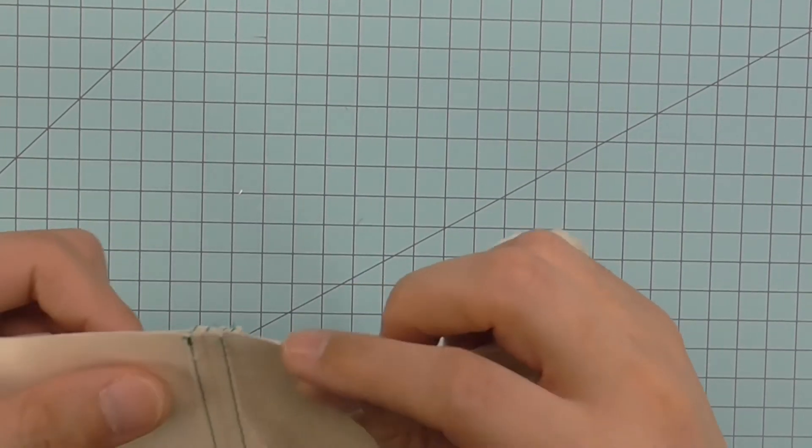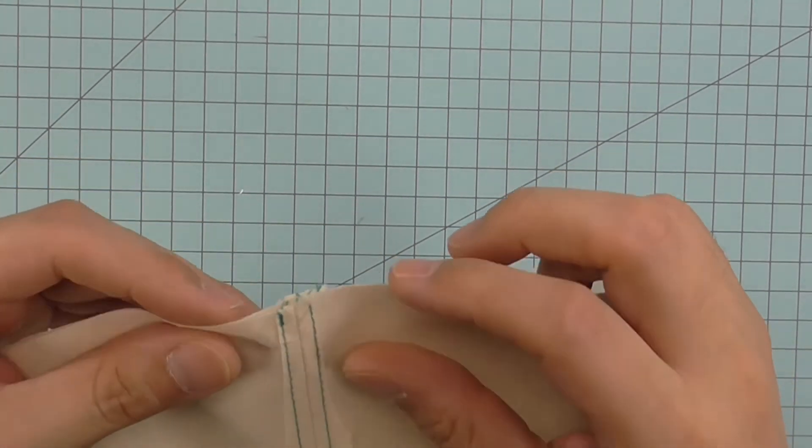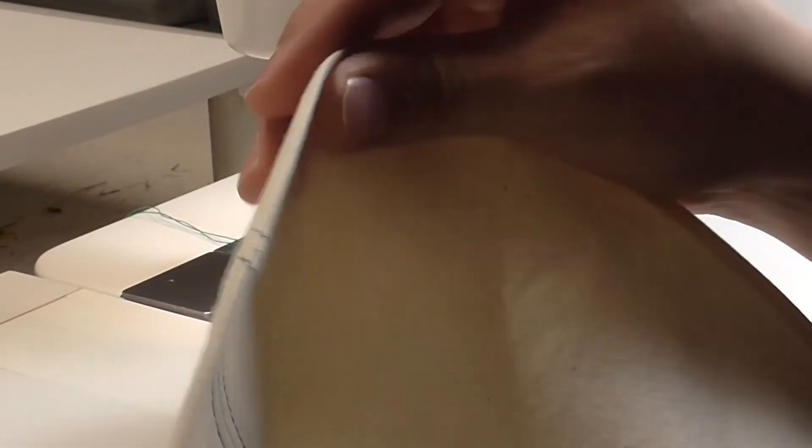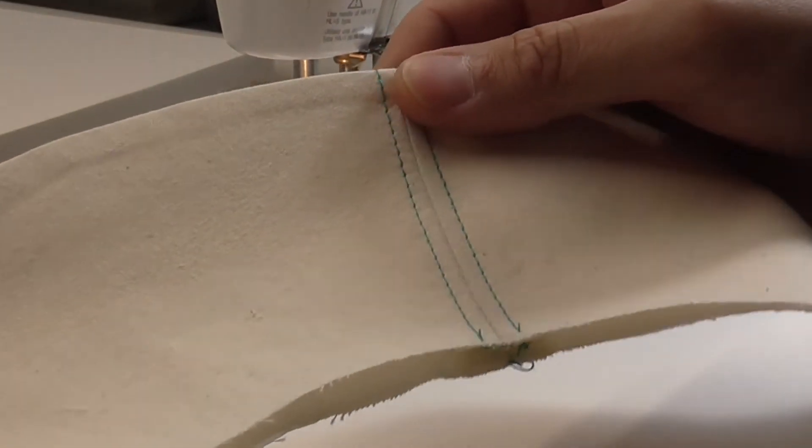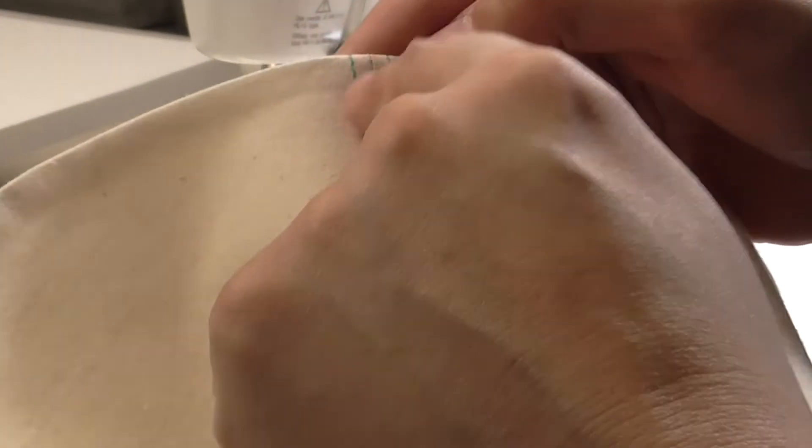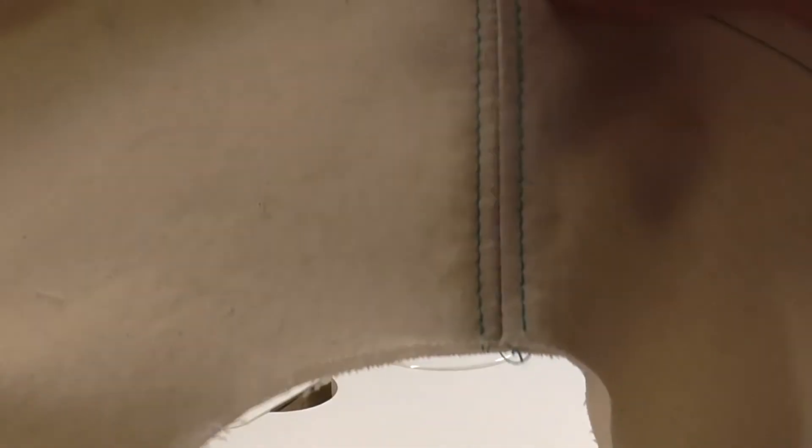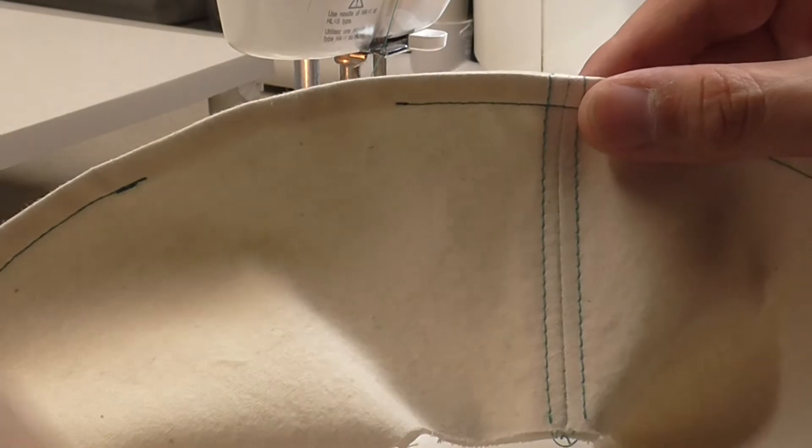Match the two seams together at the seam allowance, right sides together, and pin. Sew the outer edge and then press flat. Sew one quarter inch away from the outer edge of the brim. Start sewing towards the back and leave an opening in between the beginning and the end of the stitch.